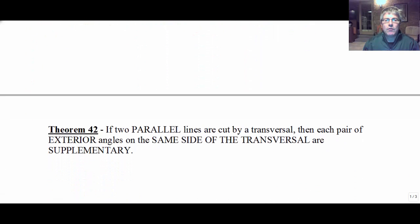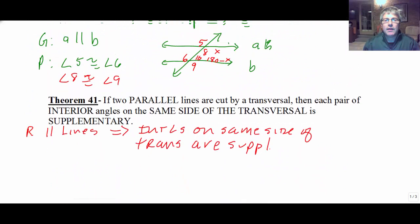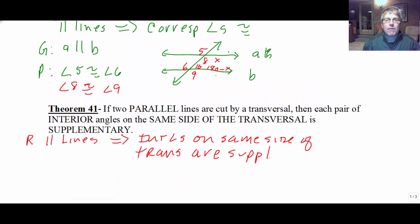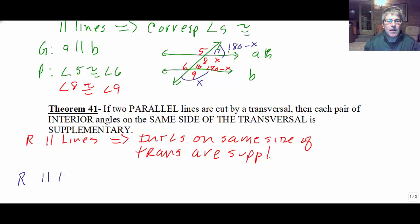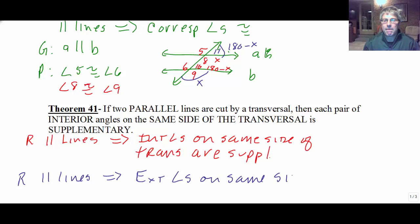We have another theorem of the same kind. Going back to our diagram, we also have that exterior angles on the same side of the transversal are supplementary — so one would be X and the other 180 minus X. Another reason in a proof: parallel lines imply exterior angles on the same side of the transversal are supplementary.